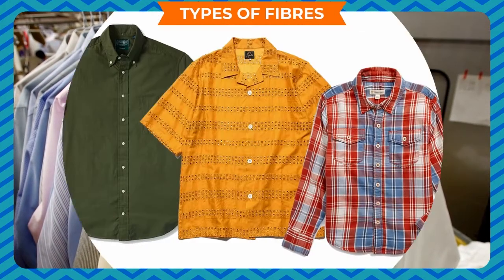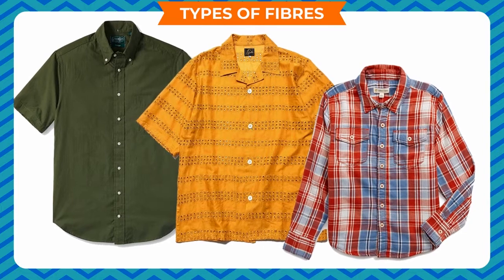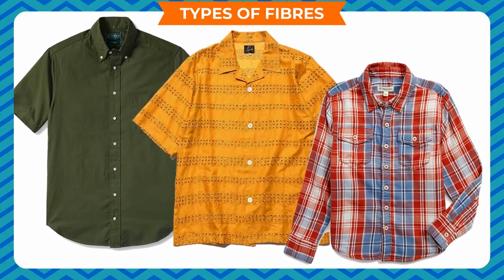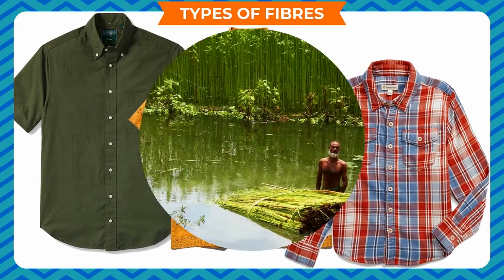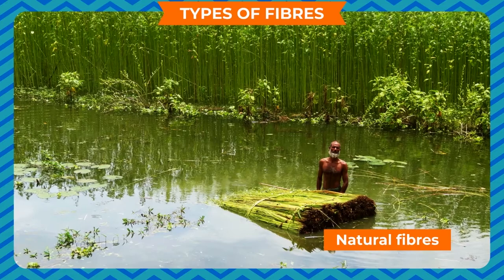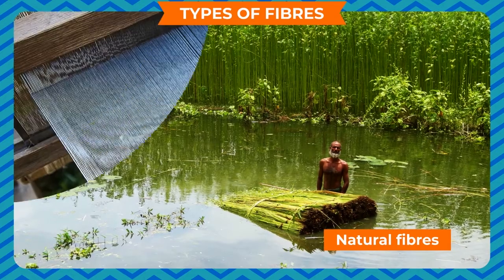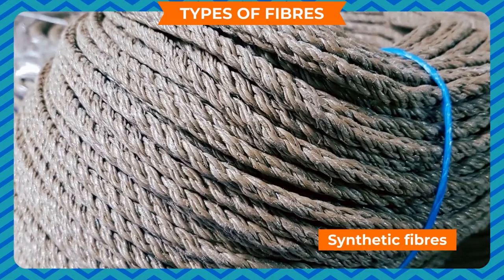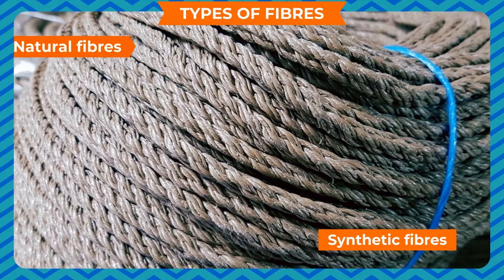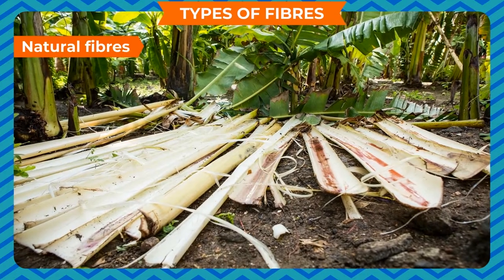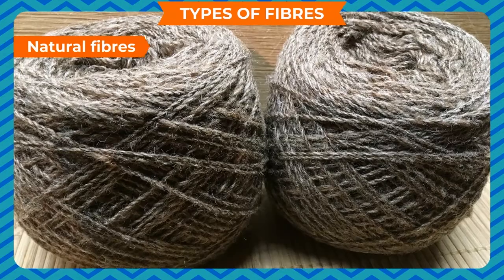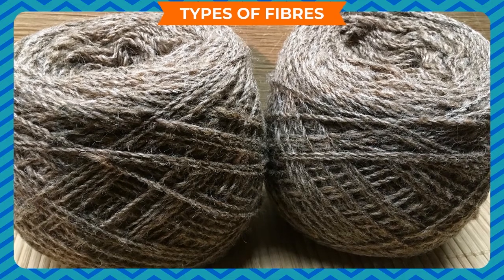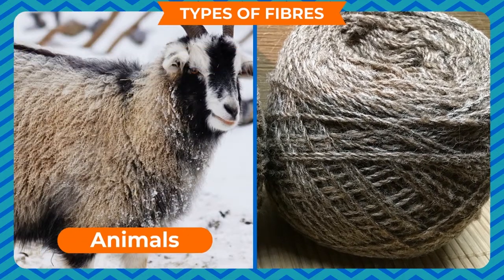Types of Fibers. Fibers are classified based on their origin. They are mainly of two types: natural fibers and man-made fibers, also called synthetic fibers. Natural fibers occur in fiber form in nature. Traditionally, natural fiber sources are broken down into animals, plants, and minerals.